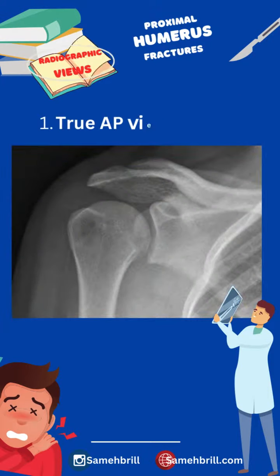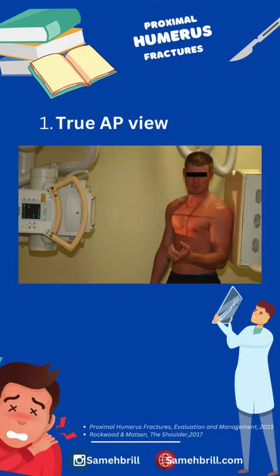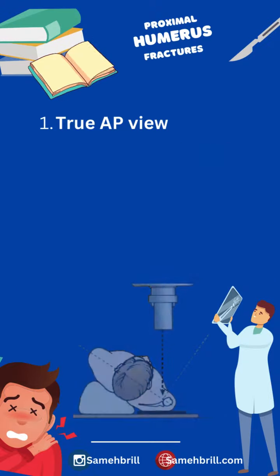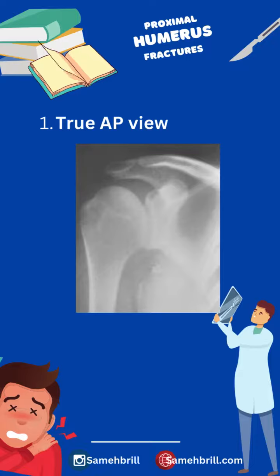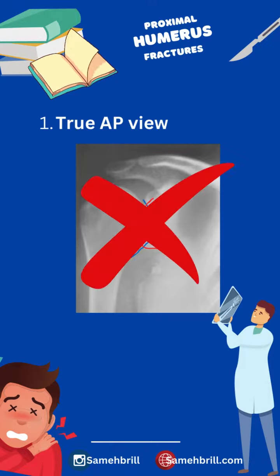Let's start with the true AP view, which is also called the Grashey view. In order to obtain a true AP view, the simplest way is to rotate the unaffected shoulder away 30-40 degrees, allowing the injured side to rest upon the x-ray cassette. Notice that if the AP radiograph is taken without performing this maneuver, there will be an overlap of the head with the glenoid rim, and that's not a true AP view.